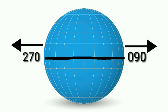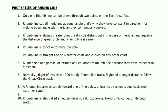Point number seven — normally, flights of less than 1000 nautical miles fly a rhumb line track; flights of longer distance follow the great circle track. Point number eight — a rhumb line always spirals towards one of the poles unless the direction is east, west, north, or south. Point number nine — a rhumb line is also called an equiangular spiral, loxodrome, loxodromic curve, or rhumb Mercator track.